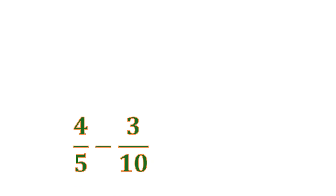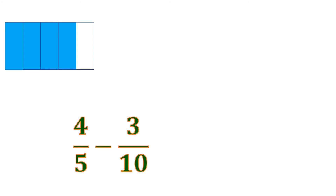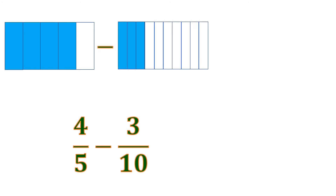Now for subtraction. We have 4 fifths minus 3 tenths. This is a subtraction of dissimilar fractions with two different denominators, 5 and 10, but at least they are multiples of each other. Let's visualize: 4 fifths is 4 shaded parts out of 5, and we subtract 3 shaded parts out of 10. To make them fit, we slice each piece of 4 fifths into 2, so it becomes a total of 10 slices — the same as 3 tenths.